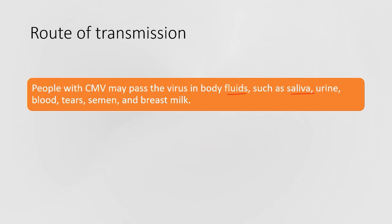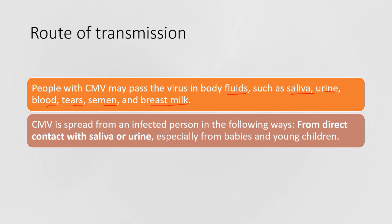Routes of transmission: people with CMV may pass the virus through body fluids such as saliva, urine, blood, tears, semen, and breast milk. It can spread from one person to another through sexual intercourse, or from mother to child through breast milk. CMV spreads through direct contact with saliva or urine, especially from babies and young children, and through sexual contact for adults.